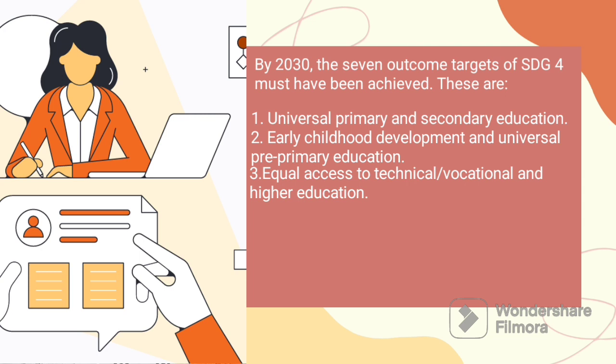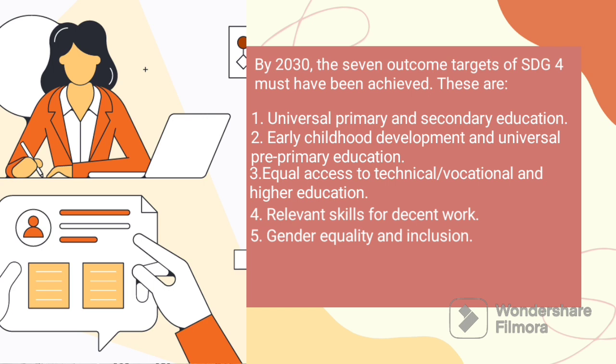Number four is relevant skills for decent work. This substantially increases the number of youth and adults who have relevant skills, including technical and vocational skills, for employment, decent jobs, and entrepreneurship. Number five is gender equality and inclusion. This eliminates gender disparities in education and ensures full access to all levels of education and vocational training for vulnerable groups, including persons with disabilities, indigenous people, and children in vulnerable situations.